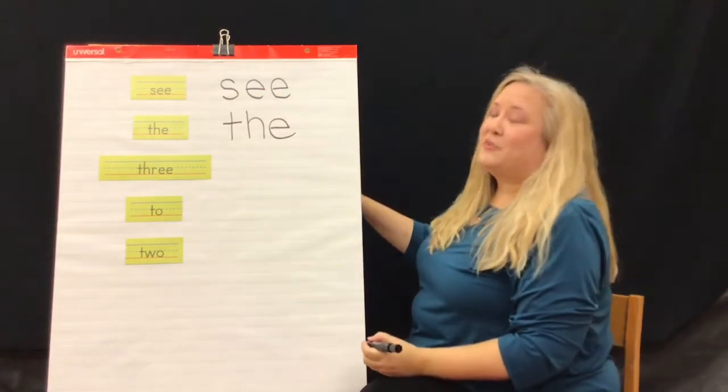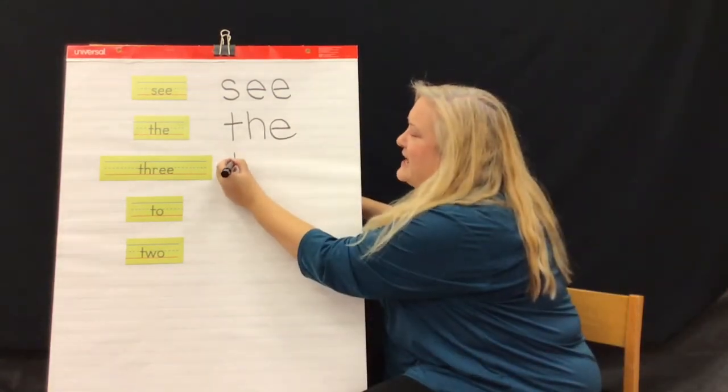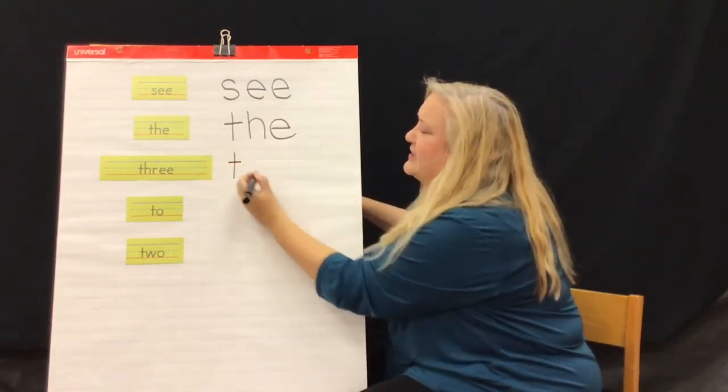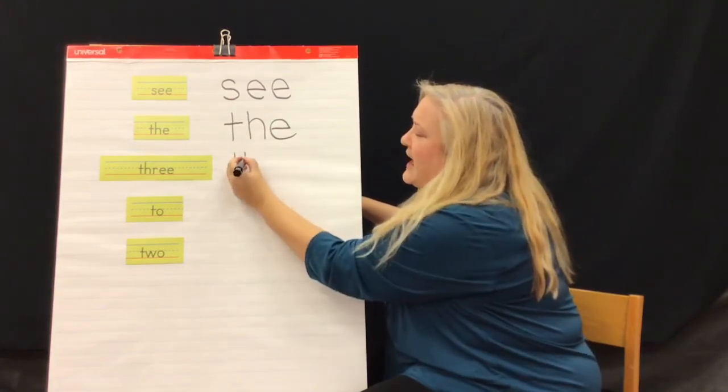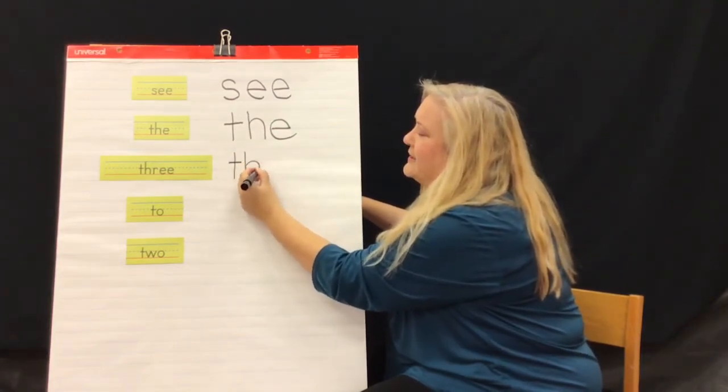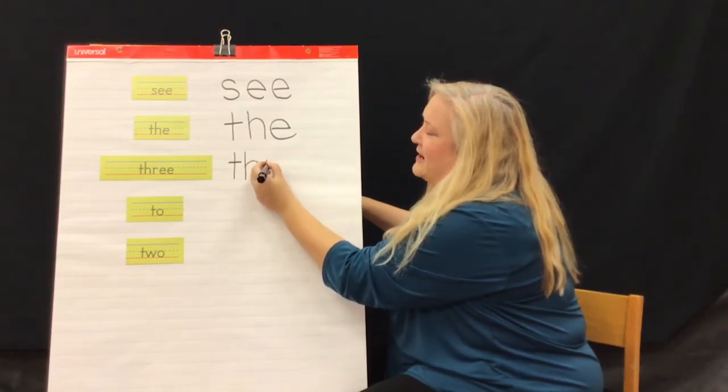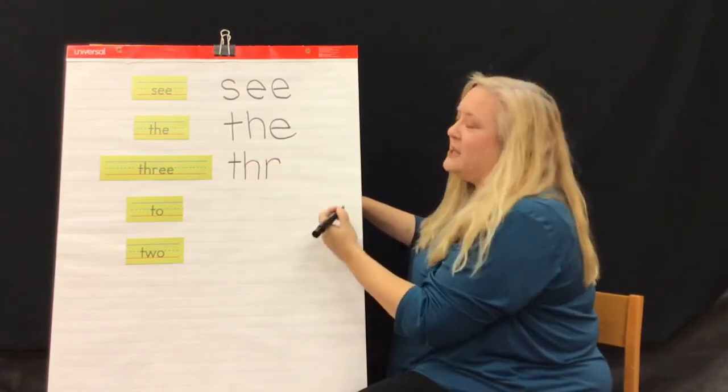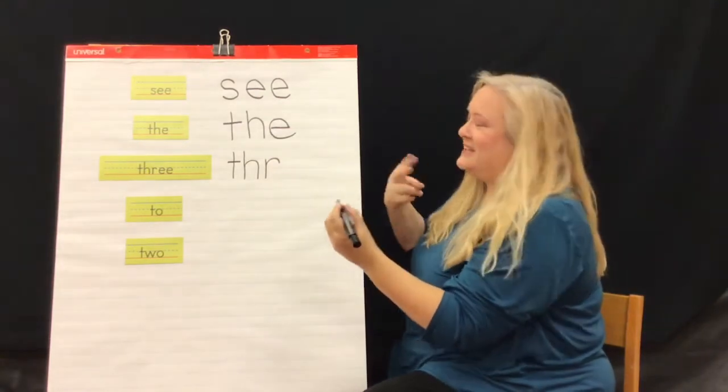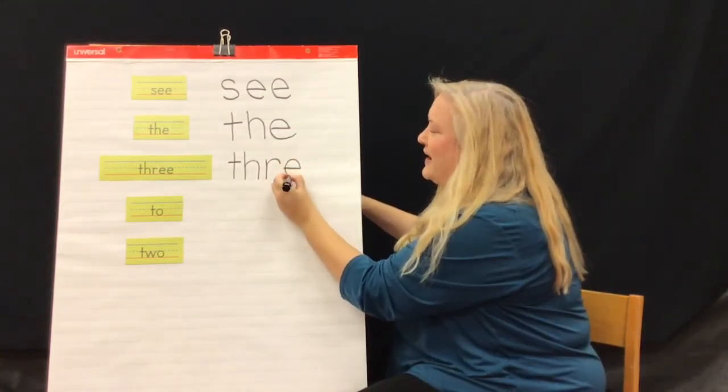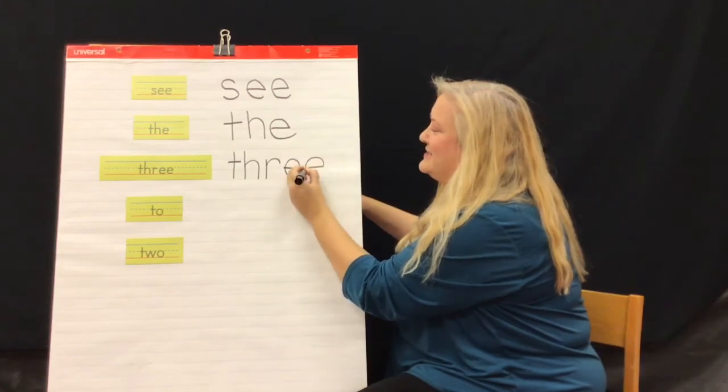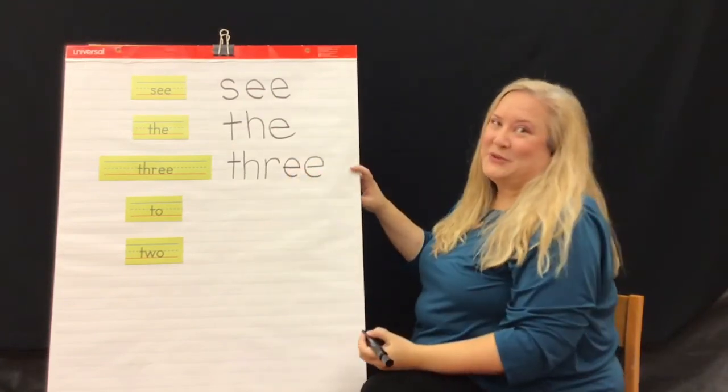Then we have the word three. Let's make our T again. Tall line and cross a little there. Then we have our H, tall, over the hill and down. Let's make our R, a short line, come over the hill a little bit. Then we have two E's. Let's make our E's again. One and two. That's the word three.